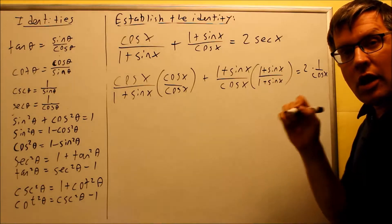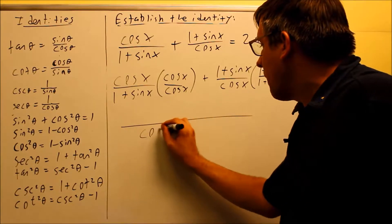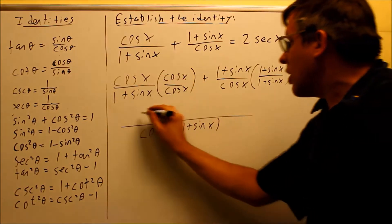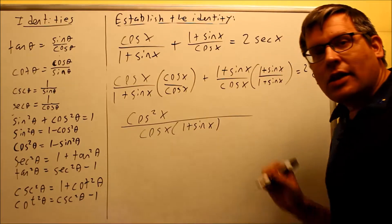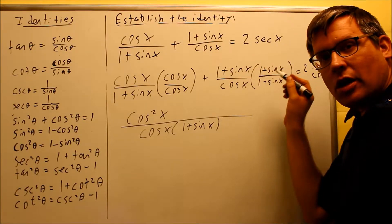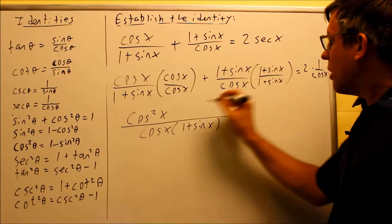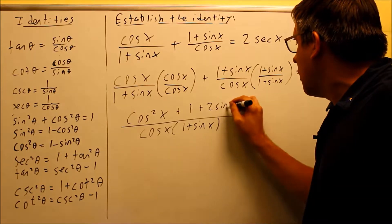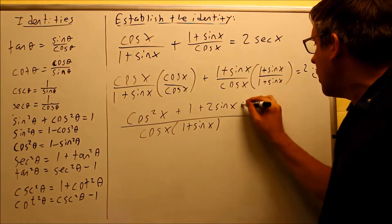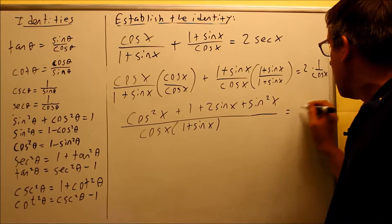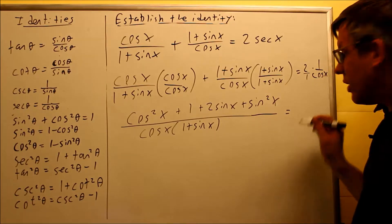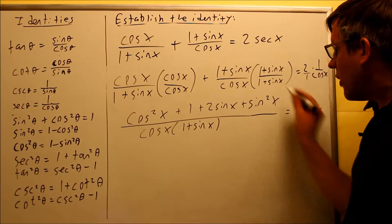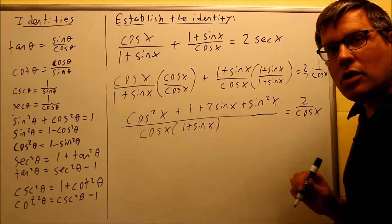I've already created the common denominator, so now I'm going to rewrite it as one single fraction. On the bottom, cosine x, 1 plus sine x. On the top, I'll multiply these together, cosine squared x. And then on this one, I have to do a FOIL step. So I need to do 1 times 1 is 1, and then I have a sine x and a sine x, that's plus 2 sine x, and then I have the last ones, that's going to be the sine squared x. And then when I multiply these together, since that's 2 over 1, I can write that as 2 over cosine x.